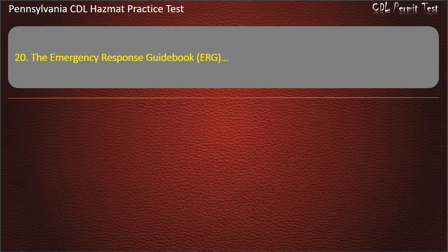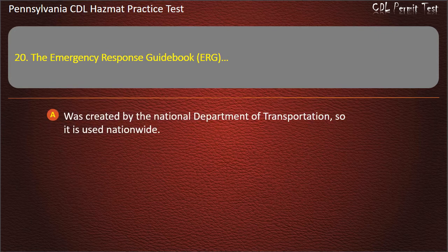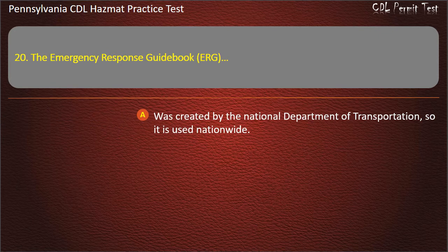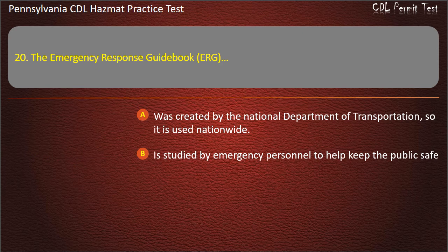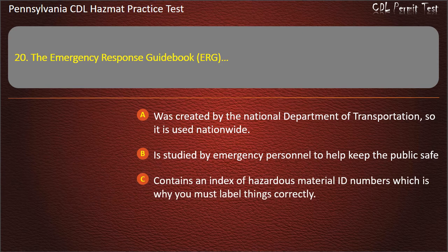Question 20. The Emergency Response Guidebook (ERG): Was created by the National Department of Transportation, so it is used nationwide; Is studied by emergency personnel to help keep the public safe; Contains an index of hazardous material ID numbers, which is why you must label things correctly; All of the above. Answer: All of the above.